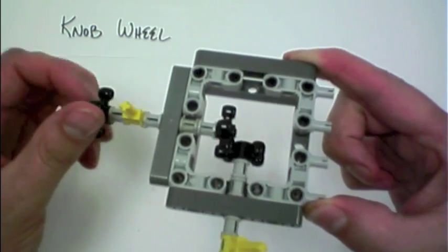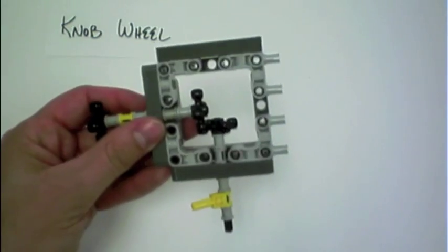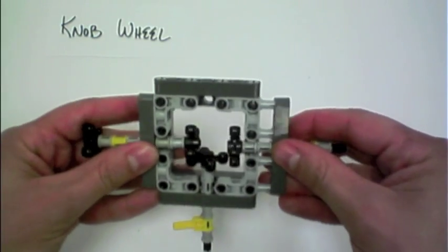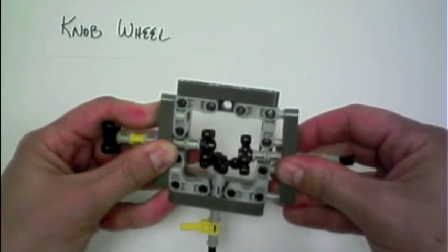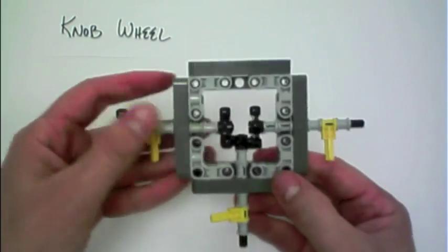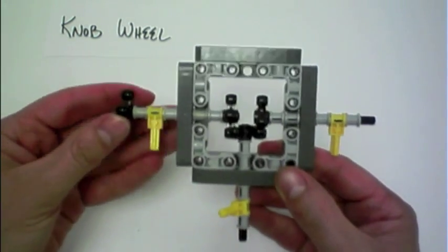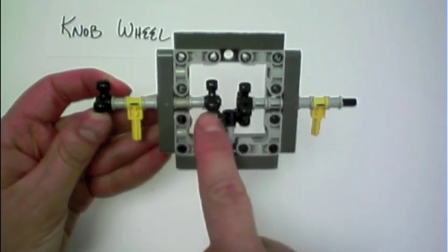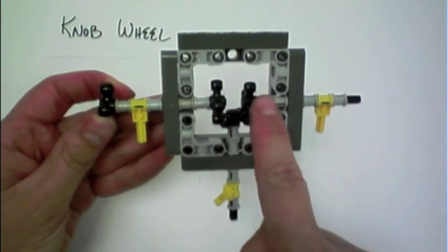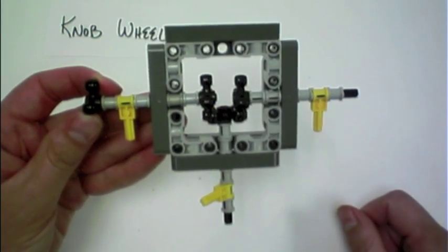If I add a third knob wheel into this contraption, and I'll just click that on here on the side, what you can see is I've now taken this, converted it 90 degrees, converted it 90 degrees again, and sent the motion out the other side.